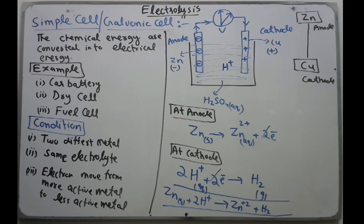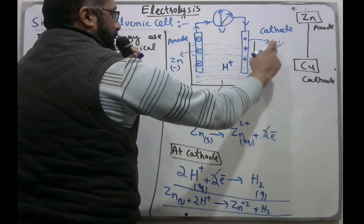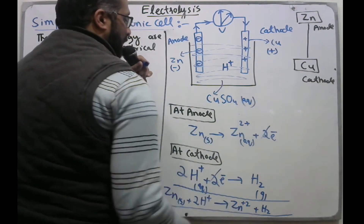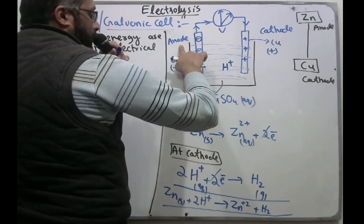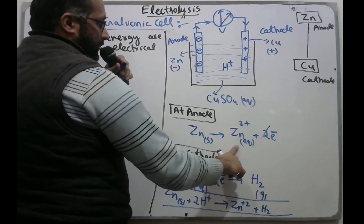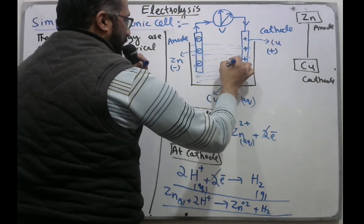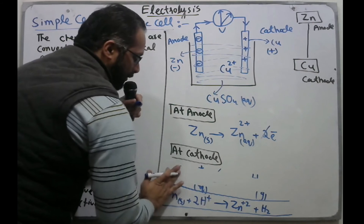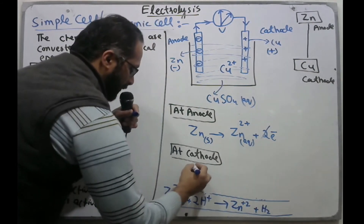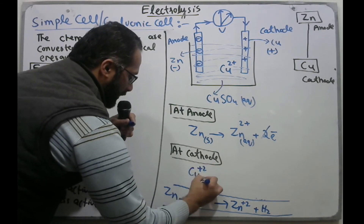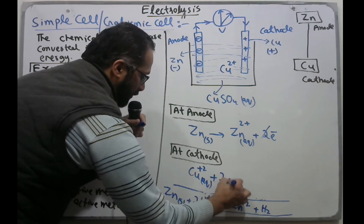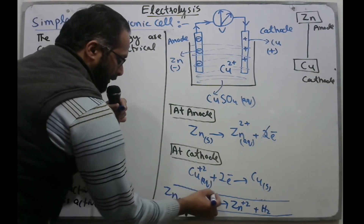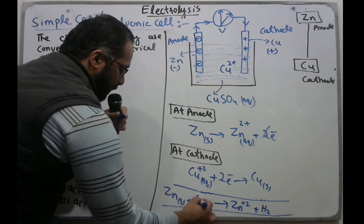In the second example, zinc is the anode, copper is the cathode, and the electrolyte is copper sulfate (CuSO₄) aqueous solution. Zinc, being higher in the reactivity series, acts as the anode and loses electrons to form Zn²⁺ ions. The solution contains Cu²⁺ ions, which at the cathode gain electrons to form copper solid.